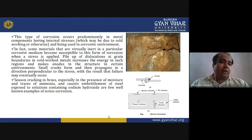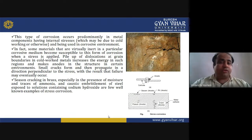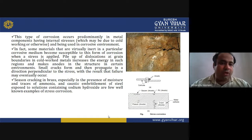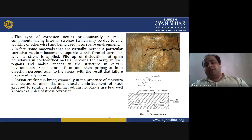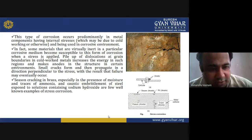Season cracking in brass, especially in the presence of moisture and stresses of ammonia, and caustic embrittlement of steel exposed to solutions containing sodium hydroxide are well-known examples of stress corrosion.